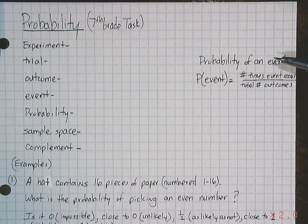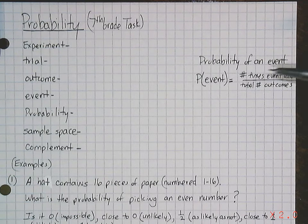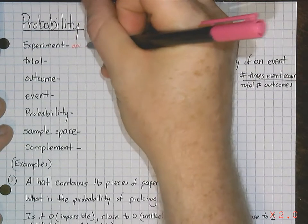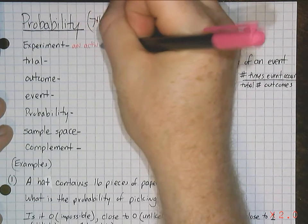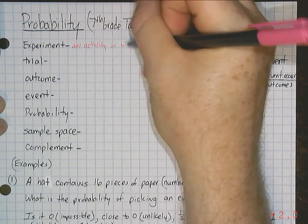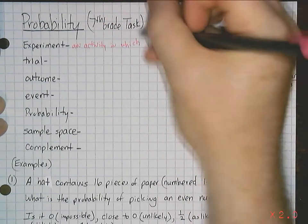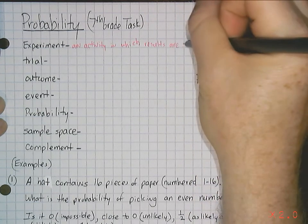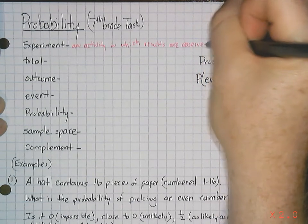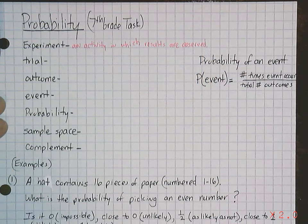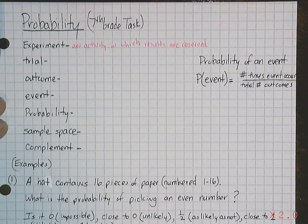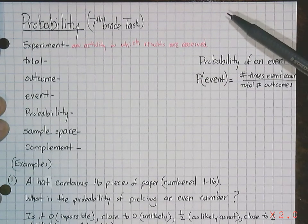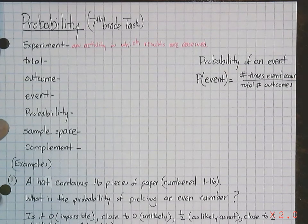So let's talk about experiment. The book describes the experiment as an activity involving chance in which the results are observed. So it's an activity in which results are observed. If you can't see what happens, it's not an experiment. You have to be able to see for yourself what happens. The activity takes place, you see what happens. That's an experiment.